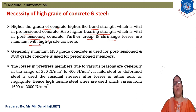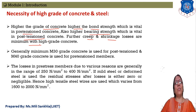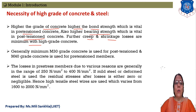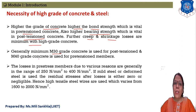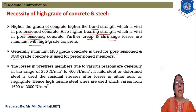Creep and shrinkage losses are minimized with higher-grade concrete — this is very important. When we use higher-grade steel and concrete, the losses due to shrinkage and creep are reduced, which we will learn in detail in chapter two on losses of prestress. For pre-tensioning we use M40 grade concrete (fck = 40 N/mm²) and for post-tensioning we use M30 grade (fck = 30 N/mm²).